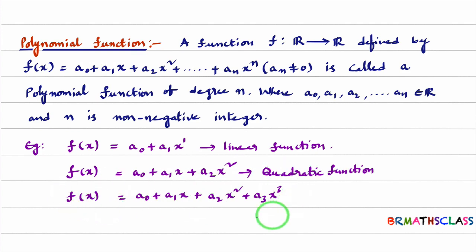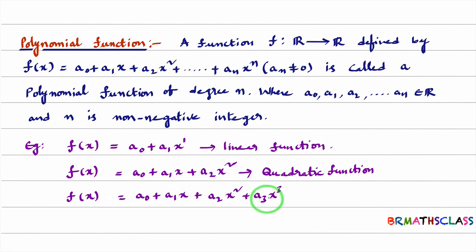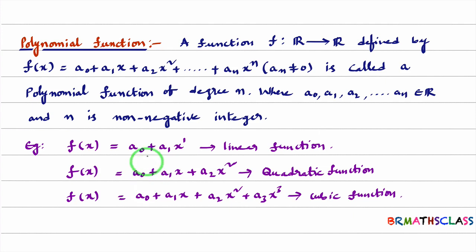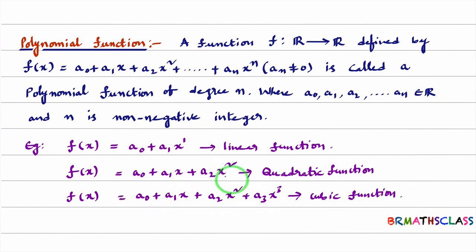Observe this function. The highest power is 3, so this function is a polynomial function of degree 3, also known as a cubic function. So here I have given three examples: a polynomial function of degree 1, a polynomial function of degree 2, and a polynomial function of degree 3. These functions are named linear, quadratic, and cubic respectively.